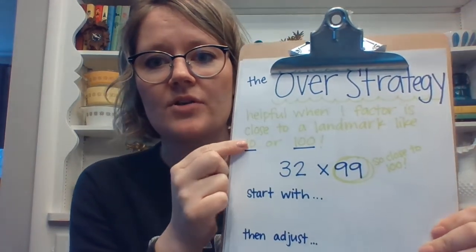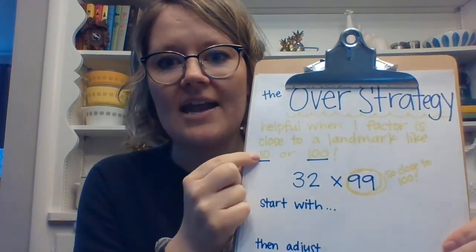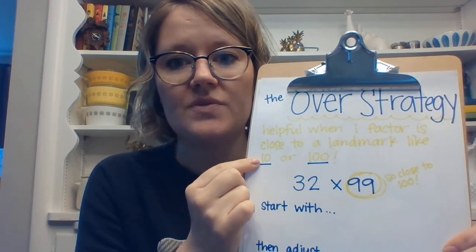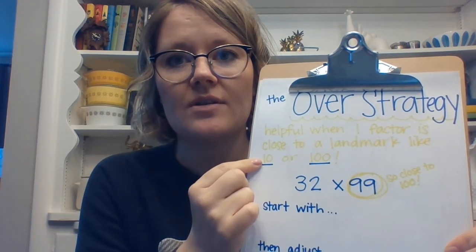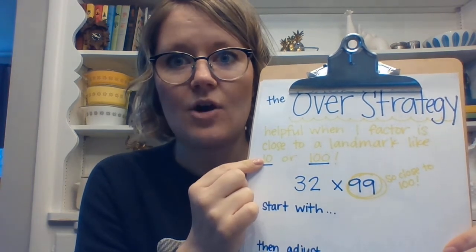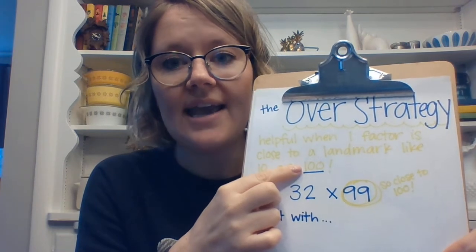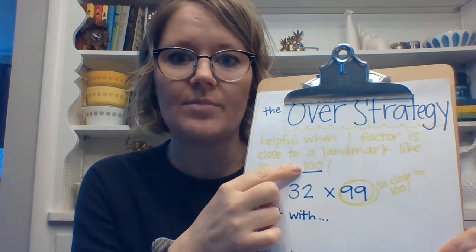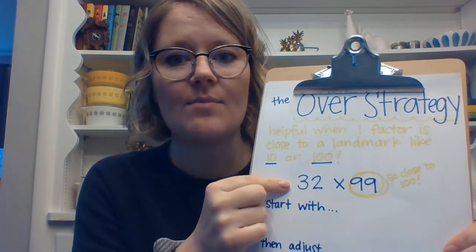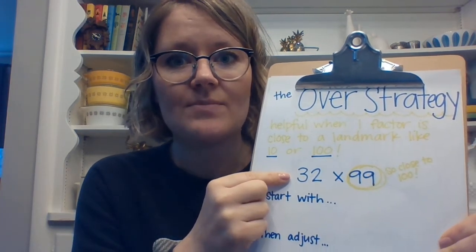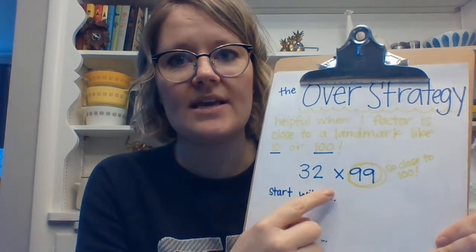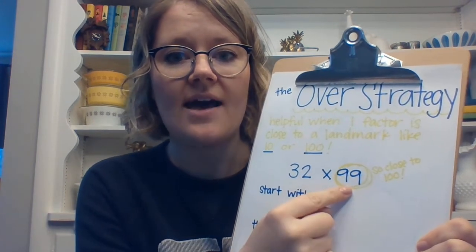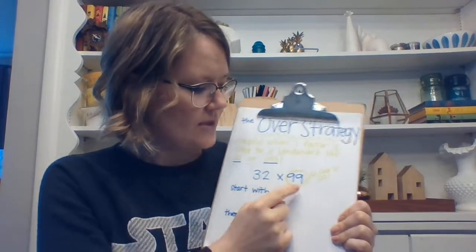The over strategy is super helpful when one of your numbers is close to a landmark number. Landmark numbers are numbers that are easy to multiply by, like 10 or 100. For example, nine groups of something is really close to the landmark 10, and 99 or 98 are close to 100, so 100 can be a useful starting place. I'm using the example 32 times 99 because 99 is a factor close to 100.